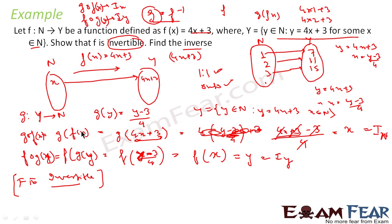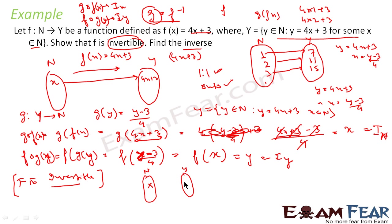To summarize: I took a function g from Y to N, found g(f(x)) = I_X and f(g(y)) = I_Y, and thus f is invertible. Diagrammatically, this was my function x in N. From N to Y I went via f, and the value became 4x + 3.